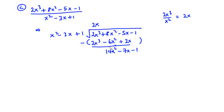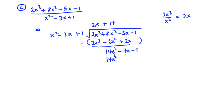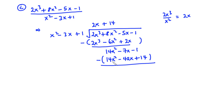Now 14x squared divided by x squared is 14. So we have 14. Then 14 times x squared is 14x squared, 14 times negative 3x is negative 42x, and 14 times 1 is 14. Subtracting: 14x squared minus 14x squared is 0. Negative 7x minus negative 42x is negative 7x plus 42x, which is 35x. And negative 1 minus 14 is negative 15.